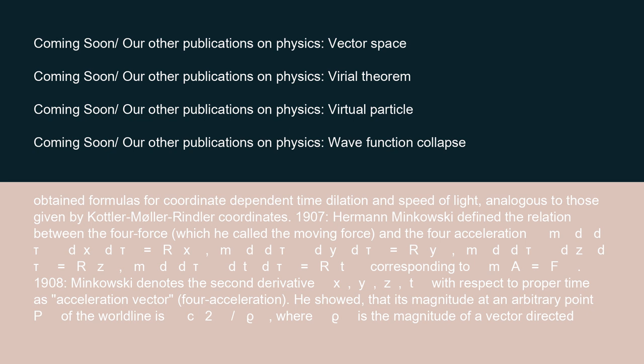1907: Hermann Minkowski defined a relation between the four-force, which he called the moving force, and the four-acceleration: m·d/dtau·(dx/dtau) equals R_x, m·d/dtau·(dy/dtau) equals R_y, m·d/dtau·(dz/dtau) equals R_z, m·d/dtau·(dt/dtau) equals R_t, corresponding to m·A equals F.